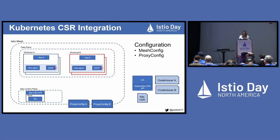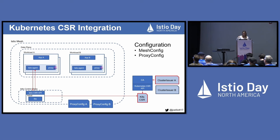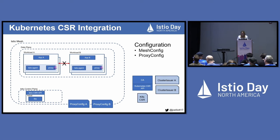Let's extend this example further by introducing workload B, which could be in another namespace or belong to a domain that should be partitioned from workload A. When using a CA that implements the Kubernetes CSR API with Istio, you can configure it to use different signers for different workloads or namespaces. By modifying the mesh config and applying Istio proxy configs, you can control which signer is used for which workload. Proxy config A specifies that workload A's certificates should be signed using cluster issuer A, and proxy config B specifies workload B certificates should use cluster issuer B. These workloads will be unable to communicate because these cluster issuers are signed by different CAs, giving them different chains of trust.